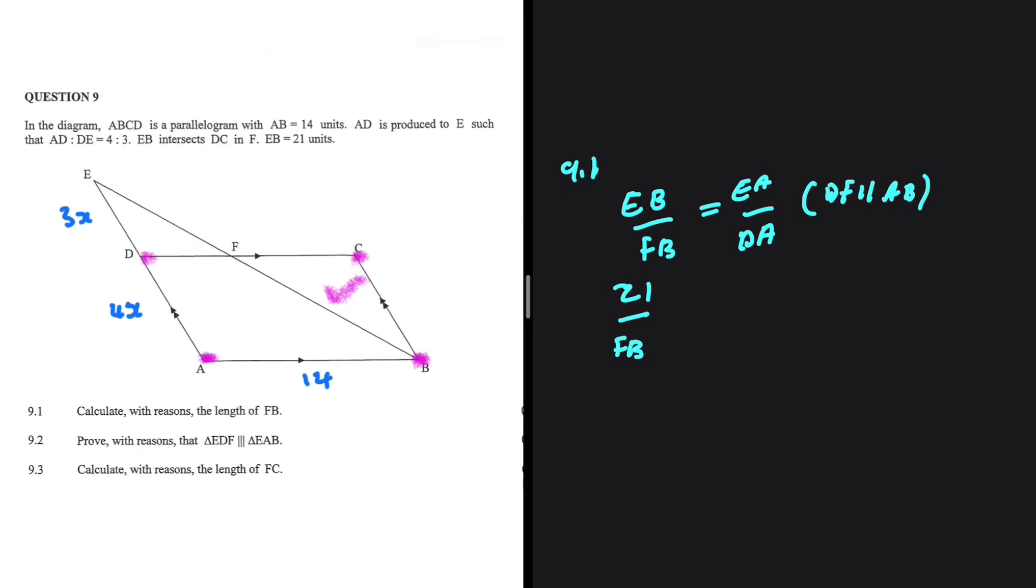FB is what we're interested in. This should be equals to EA. EA will be 7X divided by DA, which is 4X.